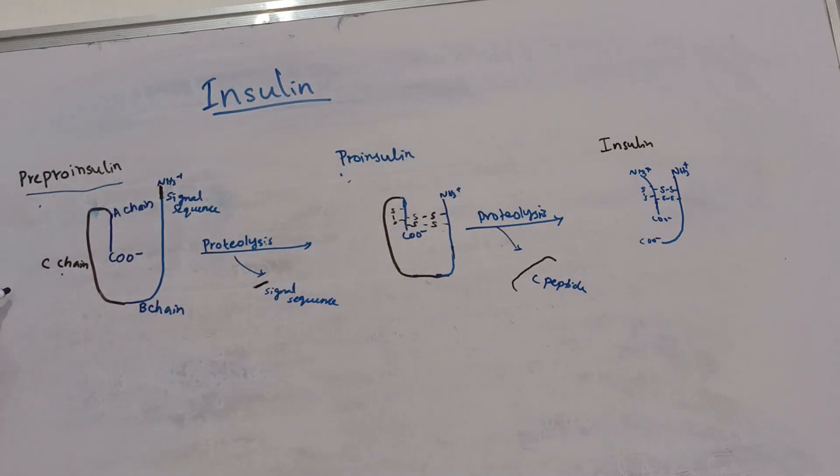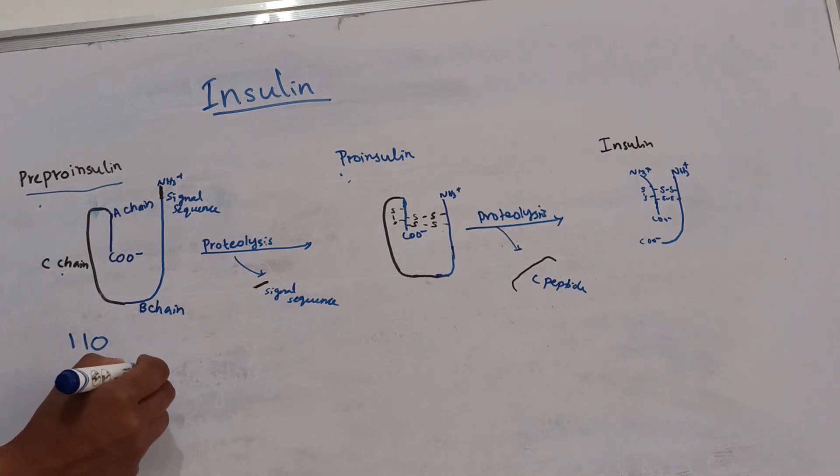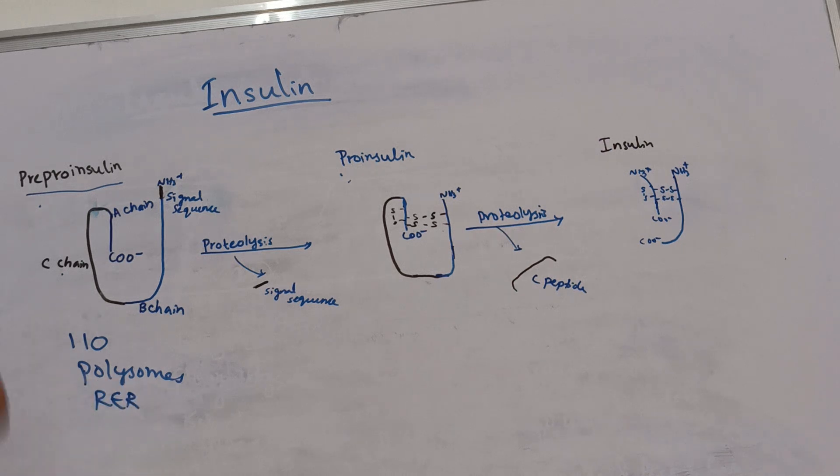This pre-proinsulin is a polypeptide containing 110 amino acids and is synthesized in the polysomes attached to rough endoplasmic reticular membrane in beta cells.